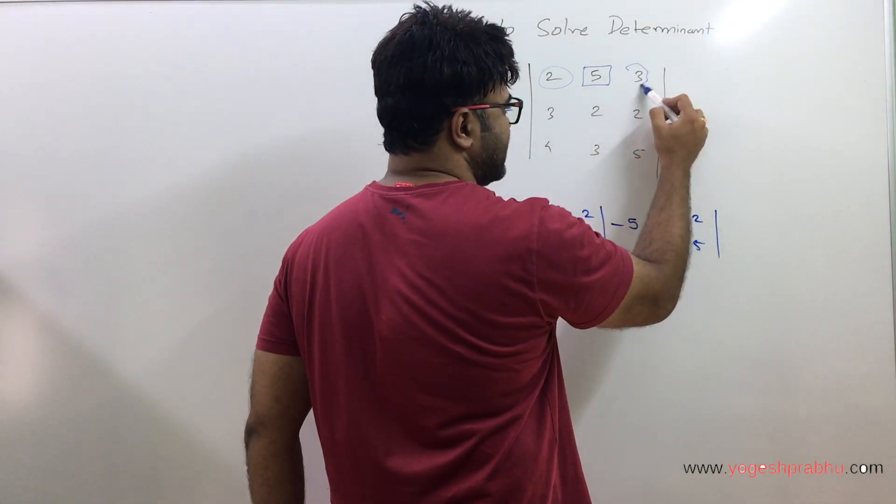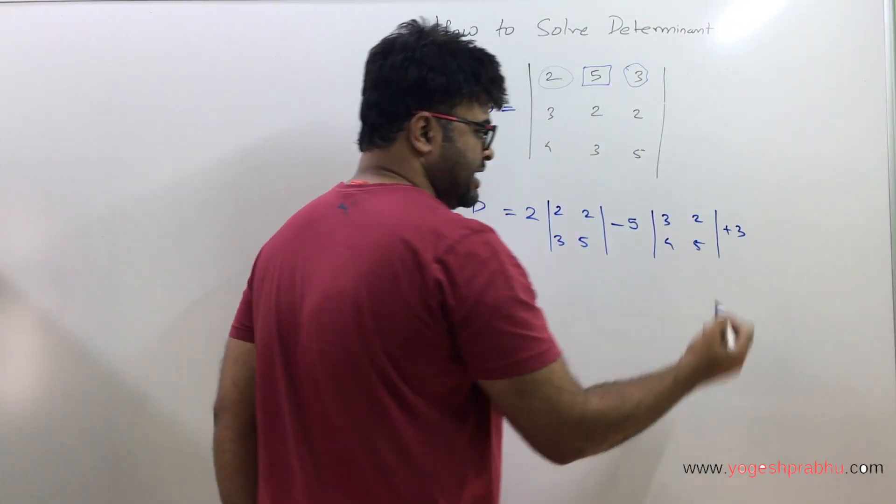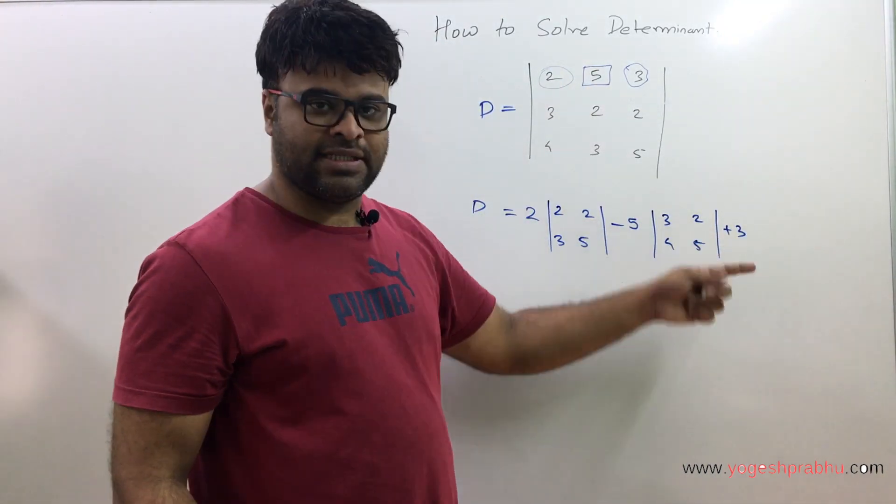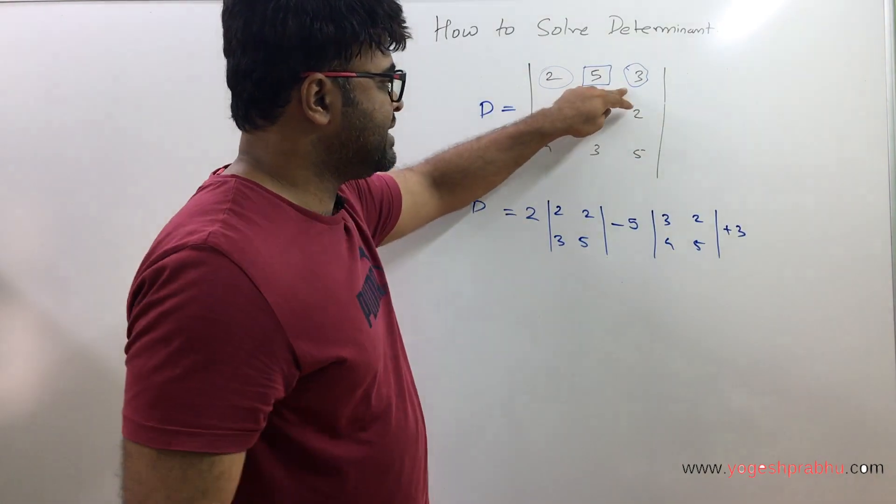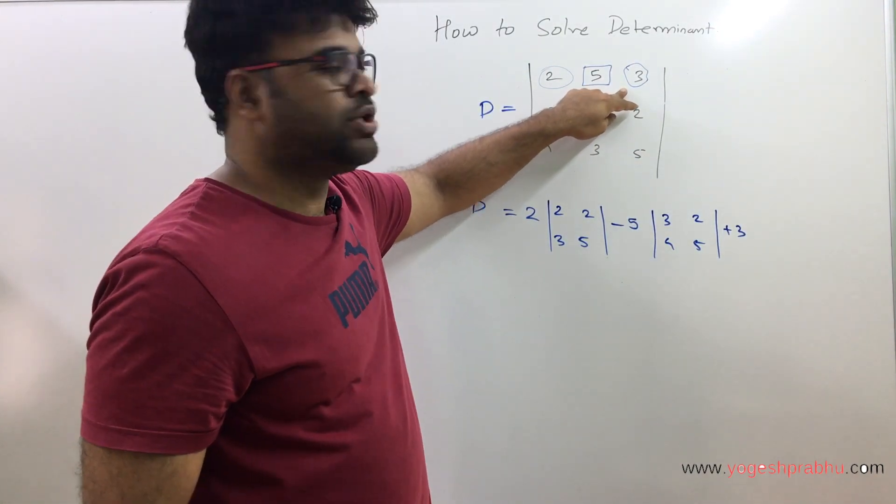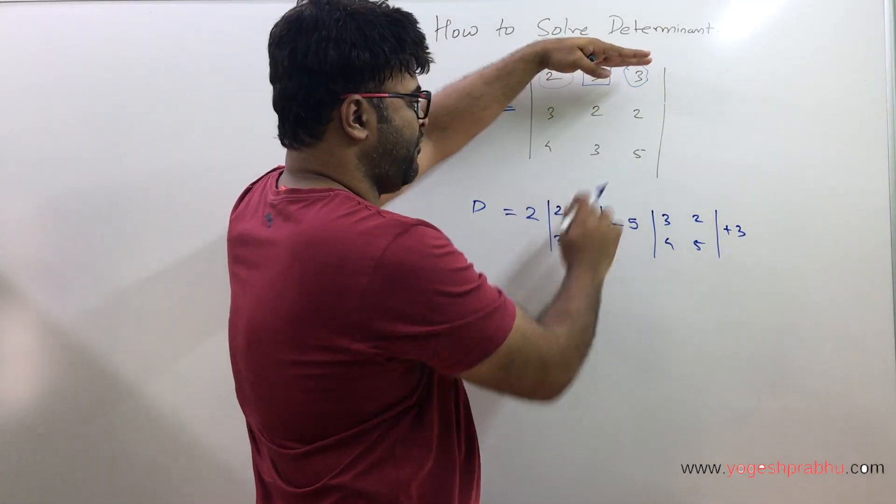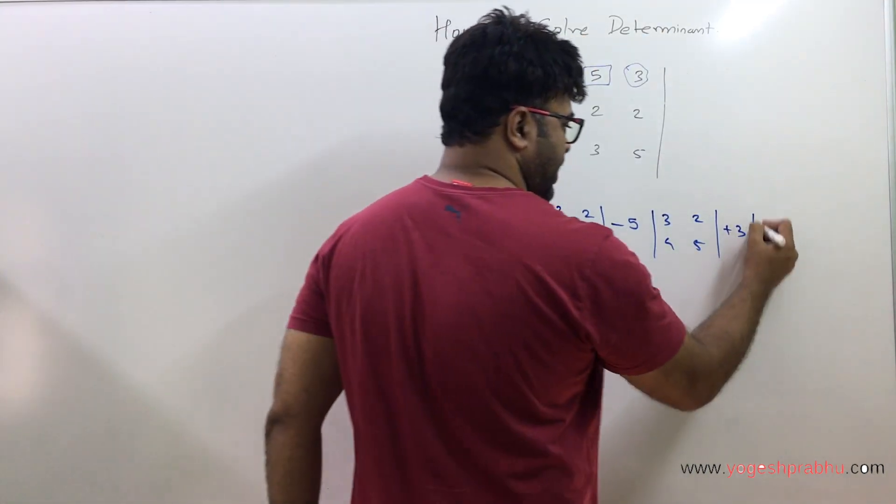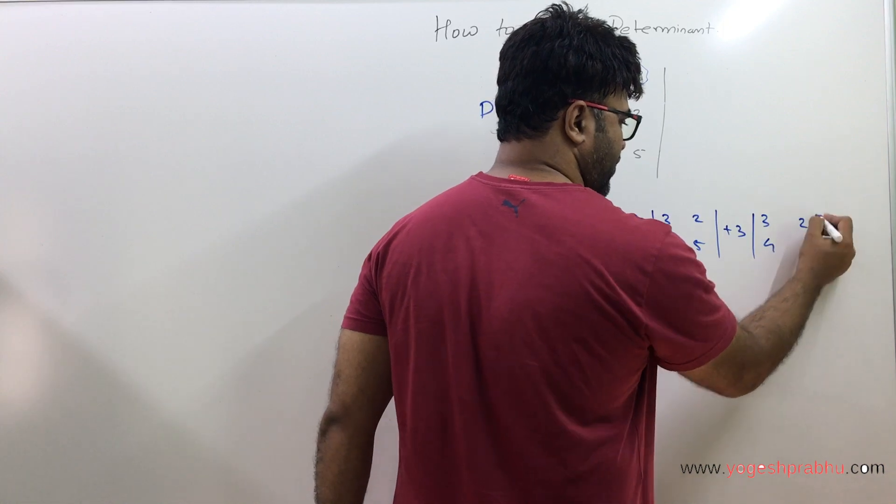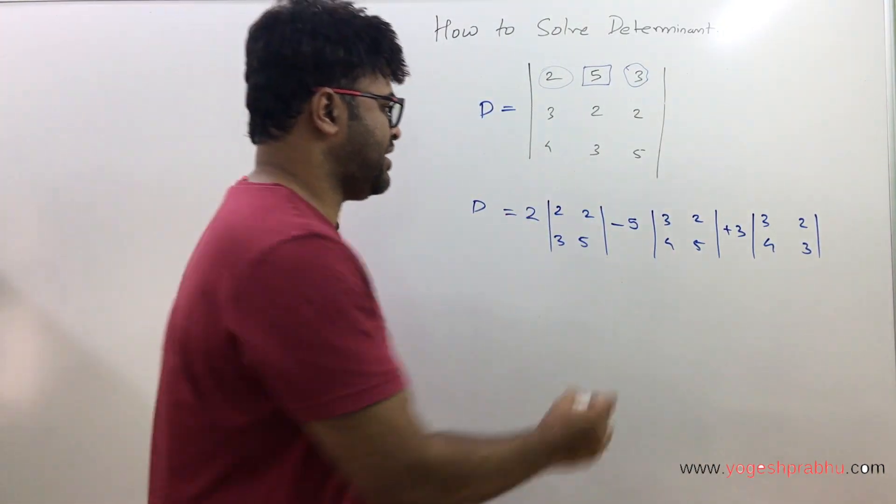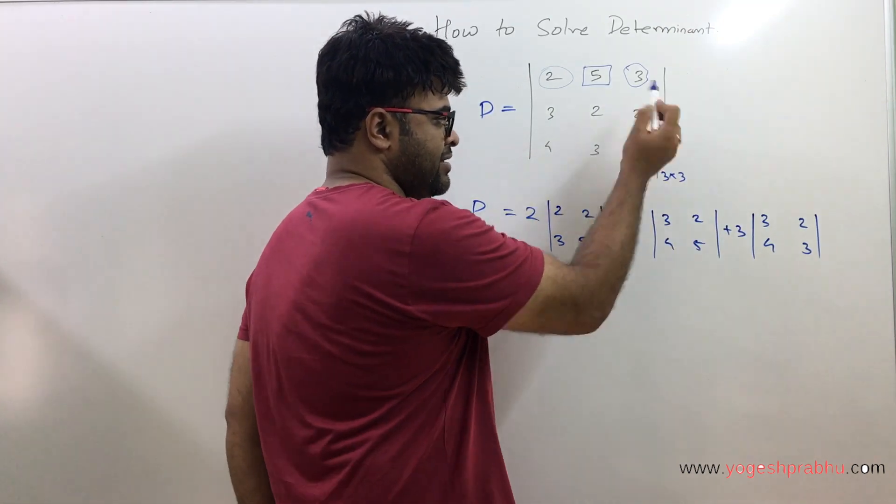Now same goes for the last one. We'll take this 3 and that 3 is taken as plus 3, so this is plus 3. Just be careful: this 2 is taken as it is, 5 was minus 5, and 3 is plus 3 again. Now with this element, again you'll hide the row and column, so what do you see is 3, 2, 4, 3. Basically we converted this 3×3 determinant into smaller ones.